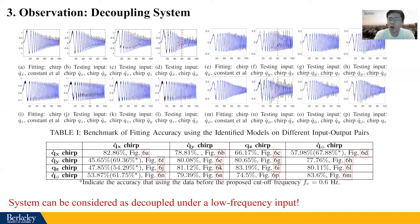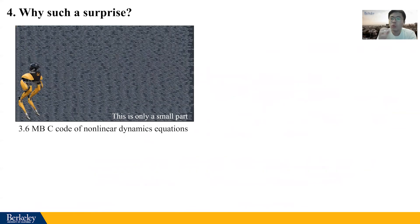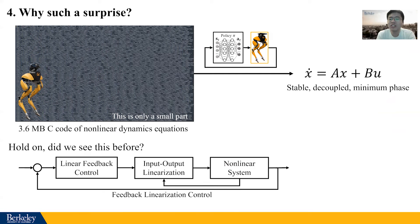This system has four inputs and four outputs, and we further show that it is decoupled under low-frequency input. This finding is actually a big surprise because when we explicitly write down all the dynamics, we obtain a huge file. But when we use an RL controller, it gives us a simple linear system — stable, decoupled, and minimum phase. This idea resembles a feedback linearization controller.